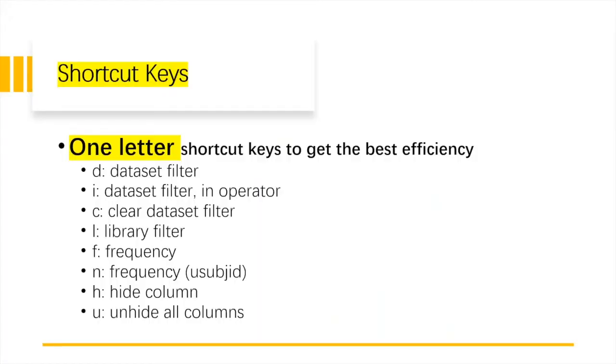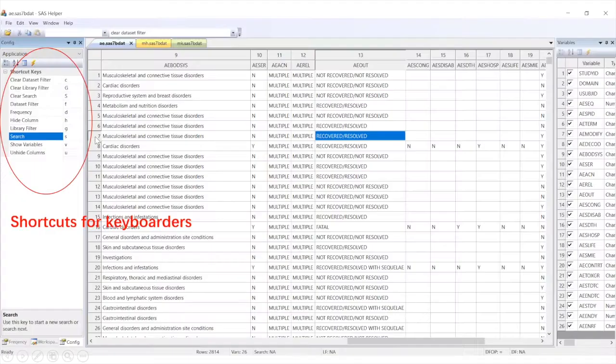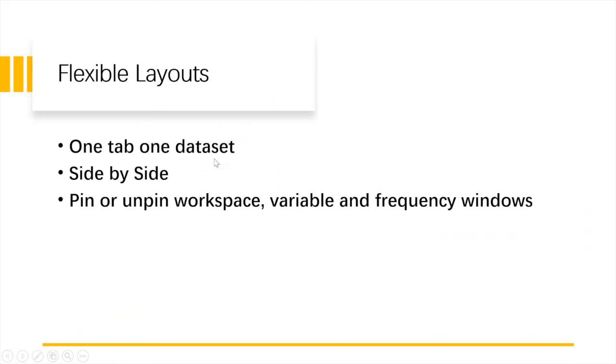Another feature is shortcuts in the highlight, and also one key shortcuts. You know that usually for the shortcut keys, it's a combination. For example, control C, control V is a combination. But SAS Helper is just a dataset viewer, it's not an editor. So we just need one key for the shortcut. For example, we use D for dataset filter, we use L for library filter, we use F for frequency. There are so many shortcut keys, we also have a window to show the shortcut keys. Here is the flexible layout. I'll just quickly go through it.